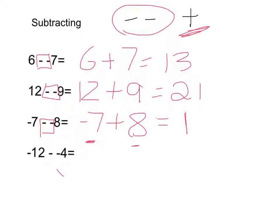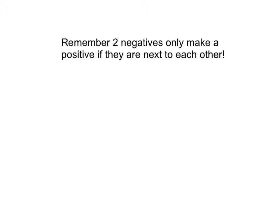And again, the last one, keep the minus 12. Two negatives together make a positive. Minus 12 add 4. So I owe someone 12 pounds, I pay them back 4, and I still owe them 8. Really, really important that you remember this. Two negatives only make a positive if they are next to each other. It's really important to remember that.